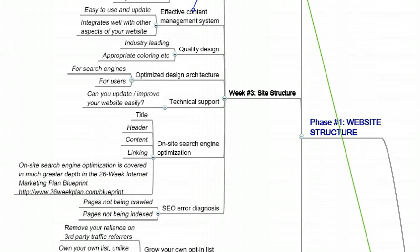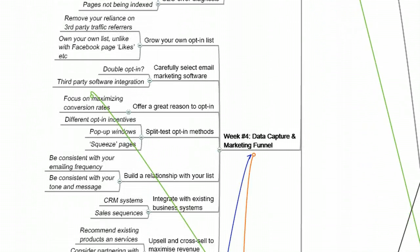Moving on to week four, which I call data capture and marketing funnel. This is about growing your opt-in list. Even though you're really successful in search engines, it doesn't necessarily mean that Google are going to love your website forever. Because of this, it's highly recommended to build a big database of customers yourself while you're getting a lot of traffic from Google, and capture that information — so that if Google does decide to de-rank you, you've built your big email list. Grow your opt-in list — have incentives in place for people to leave their names and email addresses. Carefully select your email marketing software. Aweber is great, Mailchimp is great, there are a few other great email marketing services out there.